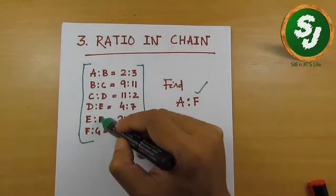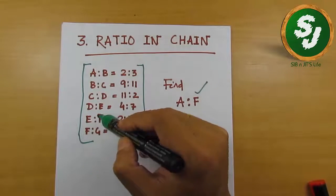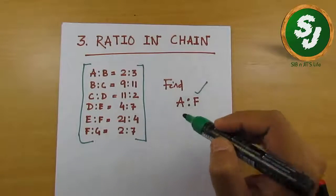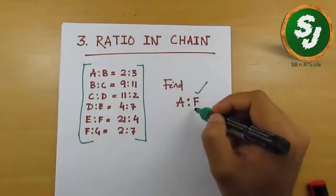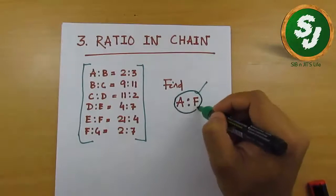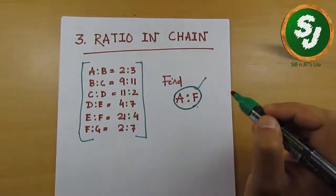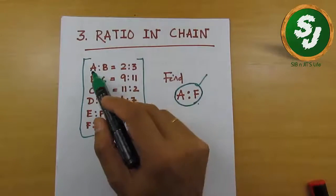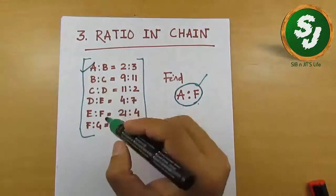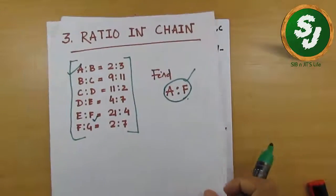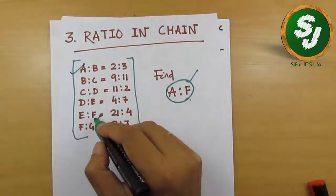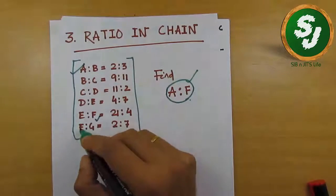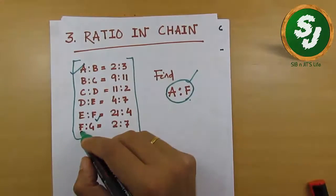So this chain will be used to calculate this question. A:F is being asked. Now if you look here carefully, it starts with A, and F is here. A is here and F is here. F is also here, but this is not important—why, you will understand.